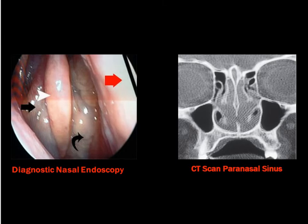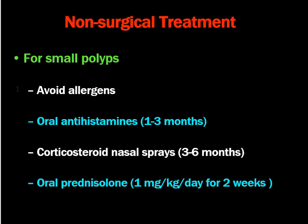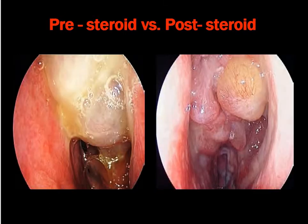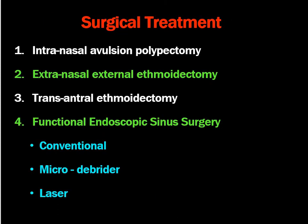How to treat ethmoidal polyps: non-surgical treatment, called medical polypectomy, is important. It addresses the allergic etiology. For small polyps we can avoid allergens and provide oral antihistamines for one to three months. Nasal steroid sprays for three to six months and oral prednisolone at 1 mg per kg per day for two weeks - or for one month in tapering doses - can be given. The pre-steroid versus post-steroid comparison shows that steroids help to reduce the size of the mass significantly.